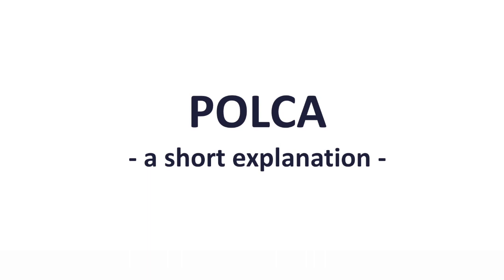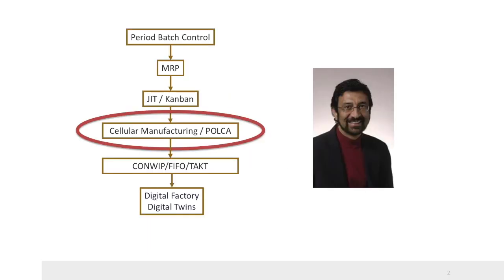Today we will explain in which situation POLCA works and how it can be used. POLCA is a planning and control system which was designed by Rajan Suri, the founder of Quick Response Manufacturing, or QRM. QRM can be seen as lean for high variety, low volume companies. It is focused on realizing short throughput times.